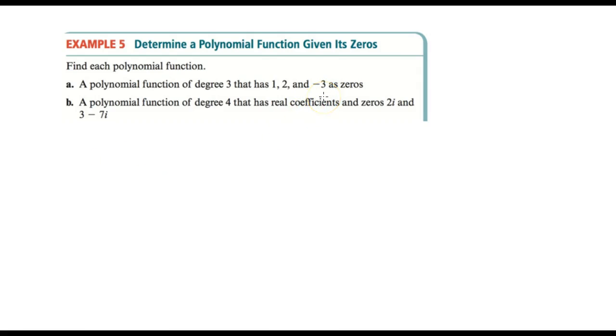For the first one, we have a polynomial with degree 3. So it's a third-degree polynomial, meaning the leading term has 3 in the exponent. And it has 1, 2, and negative 3 as zeros. The interesting thing about this – and you should have seen this in the section – is that if we know the zeros, we can find the factors or the polynomial in its factored form.